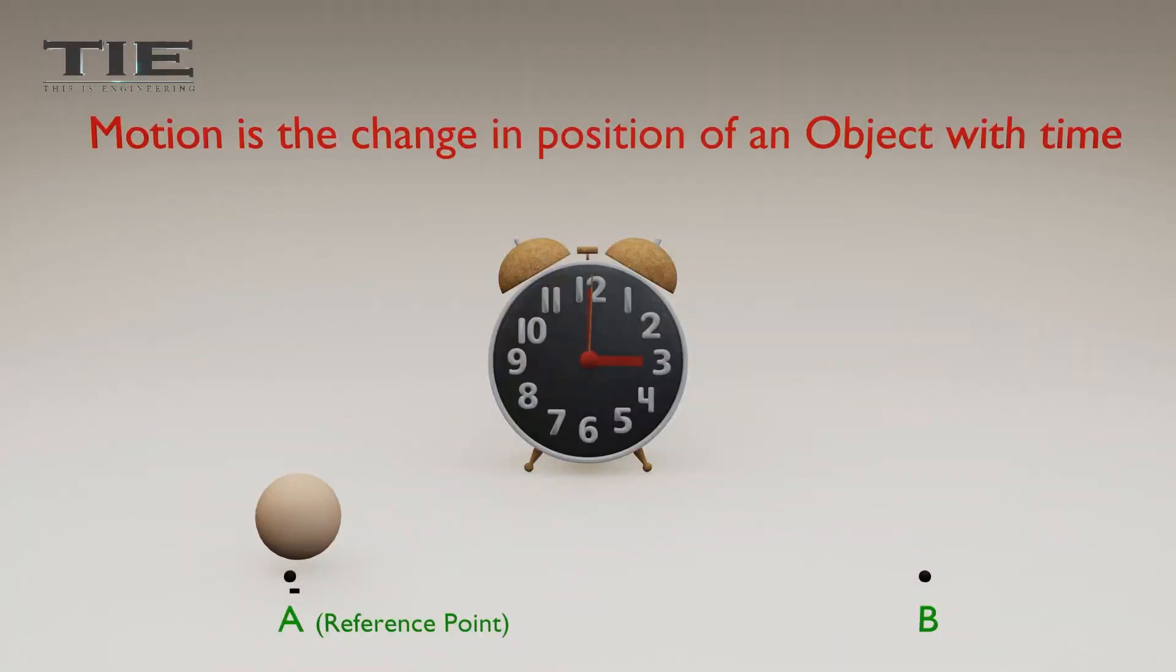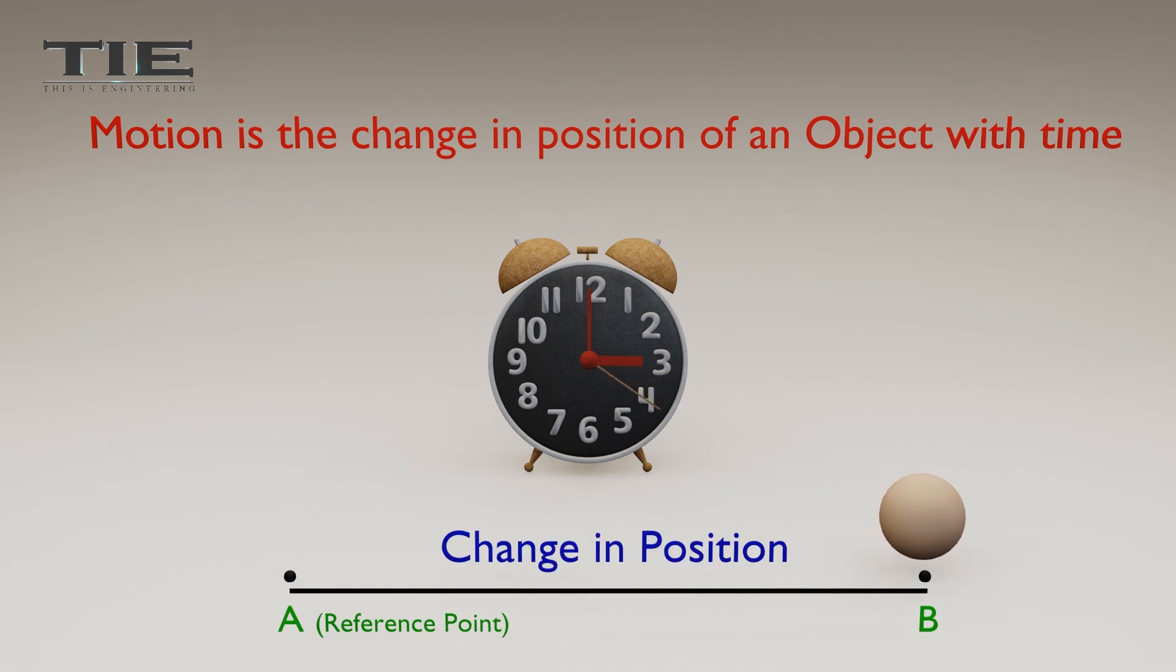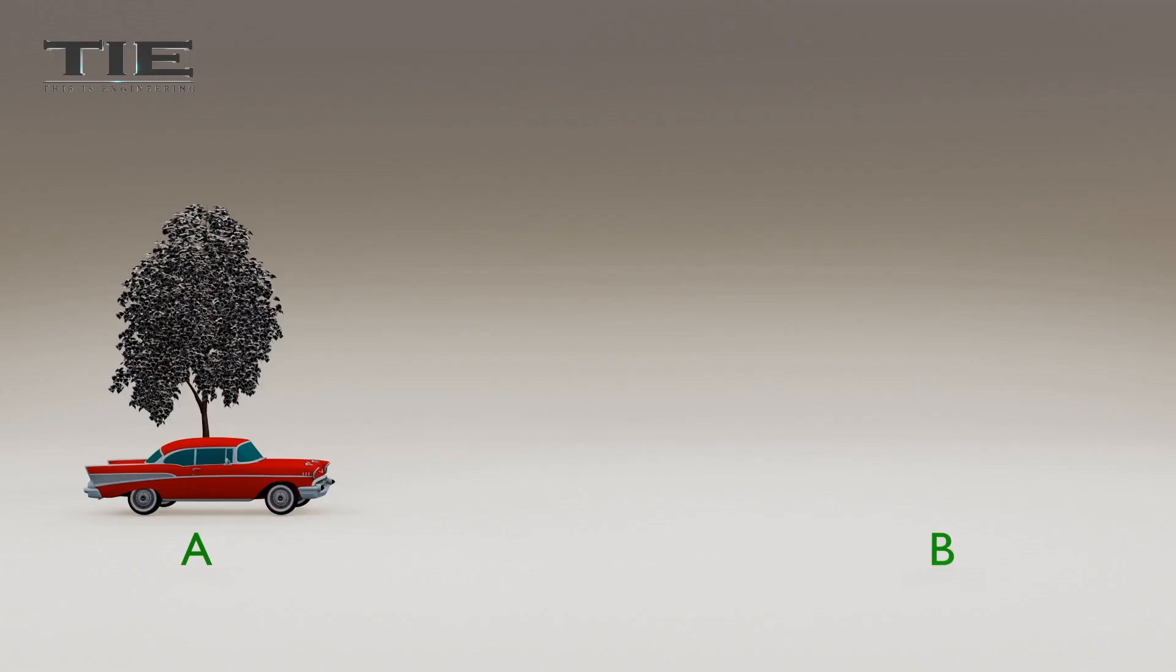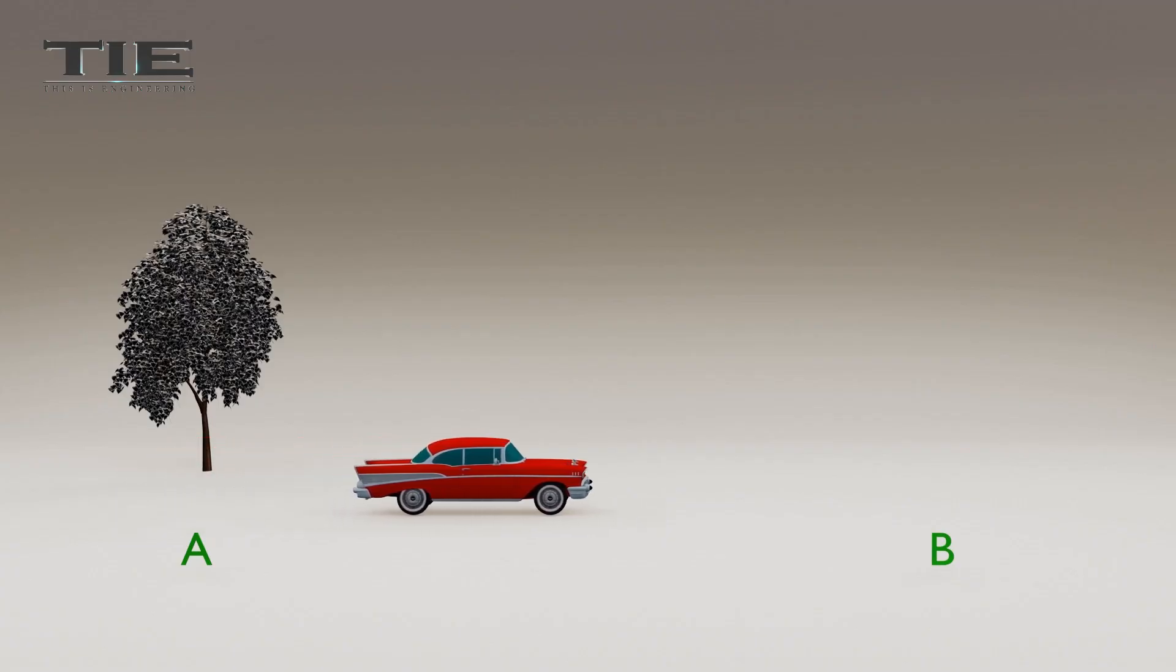Motion is the change in position of an object with time. If an object changes its position relative to a reference point, it is said to be in motion. When a car drives along a way,